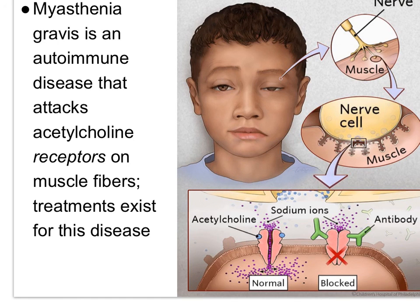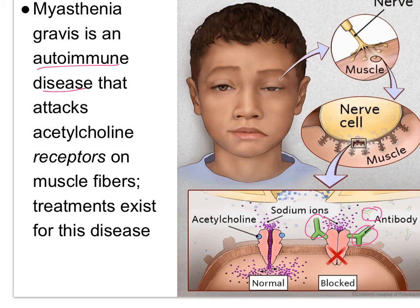Another muscle disease is myasthenia gravis, an autoimmune disease that attacks acetylcholine receptors on the muscle fiber. For some reason the immune system produces antibodies against the acetylcholine receptors on muscle cells, so the receptors do not respond and muscle contraction does not occur as it should. Fortunately, we do have treatments for this disease.